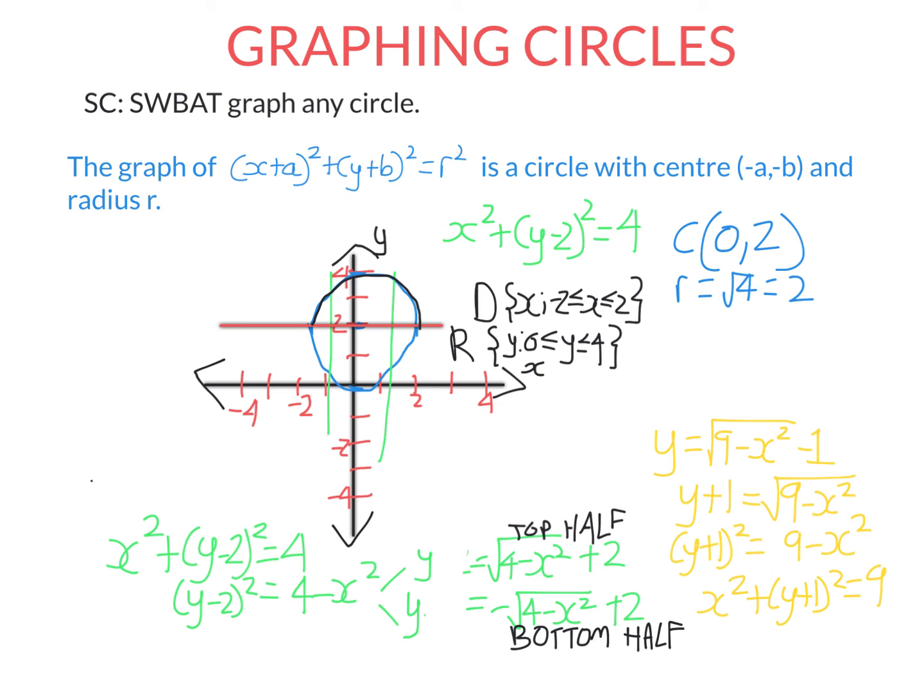So this is in the right form for a circle. This is a circle with center (0, -1), and radius 3. So I mark the center here at (0, -1). I go 3 up and I go 3 across.